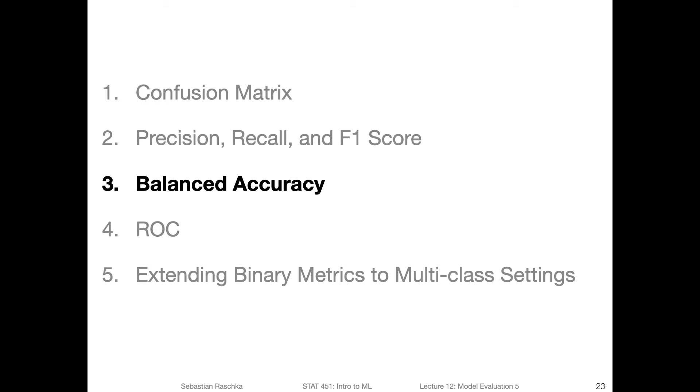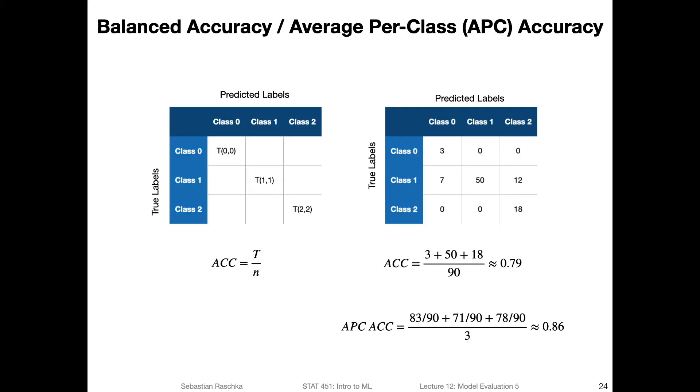All right, let's now talk about the balanced accuracy, which is helpful if we have class imbalance problems. That means if one class has more labels than another class. So here's an example showing you a confusion matrix for a multi-class classification problem where we have class zero, class one, and class two - three classes.